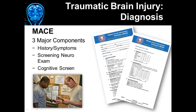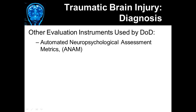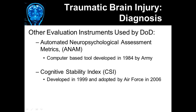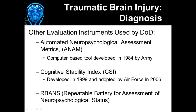A few other tools are used by the Department of Defense: the Automated Neuropsychological Assessment Metrics, used by the Army for several decades; the Cognitive Stability Index (CSI), primarily used in the Air Force; and the Repeated Battery for Assessment of Neuropsychological Status (RBANS). All of these tools have been validated — they do pick up traumatic brain injury in individuals that have sustained injury.